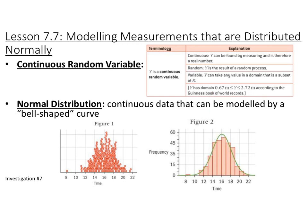We're talking about normal distributions, which is data that can be found on a bell-shaped curve — something that is symmetric about the mean.